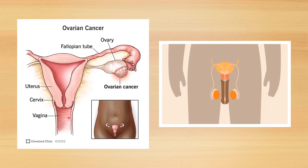If we look at the female gonadal system, the female gonads or ovaries are well preserved inside the abdominal cavity. There is no extra-abdominal sac in the case of the female. So why has nature provided a separate external compartment for the male gonads?